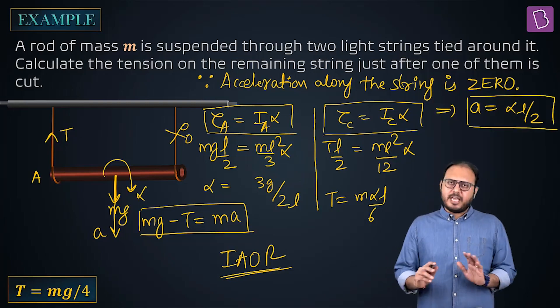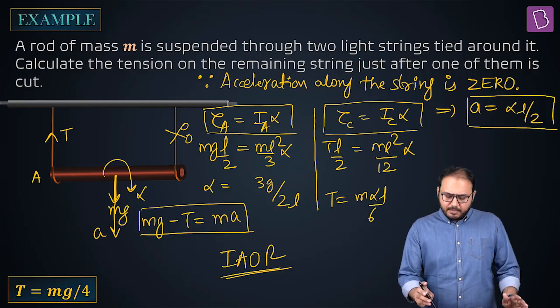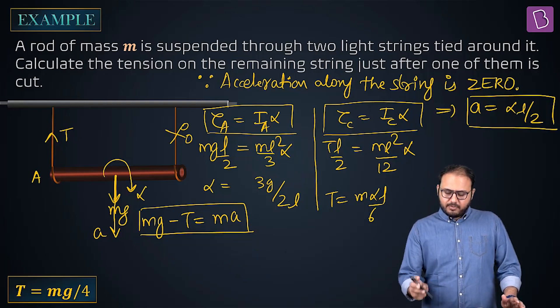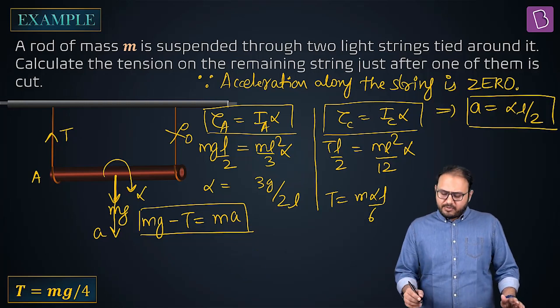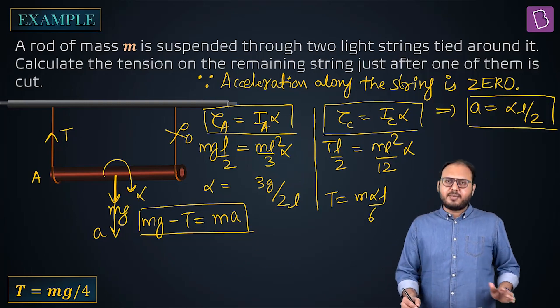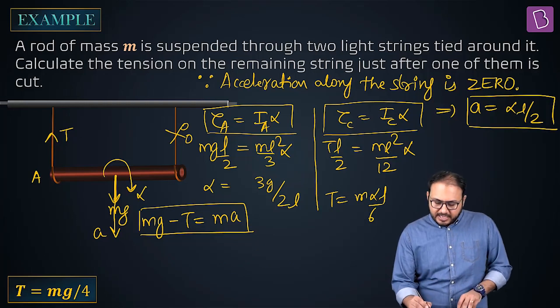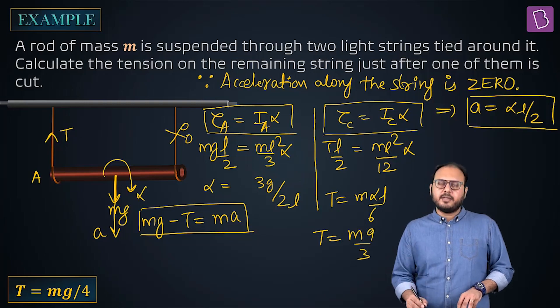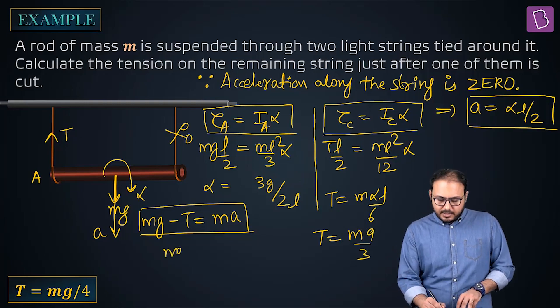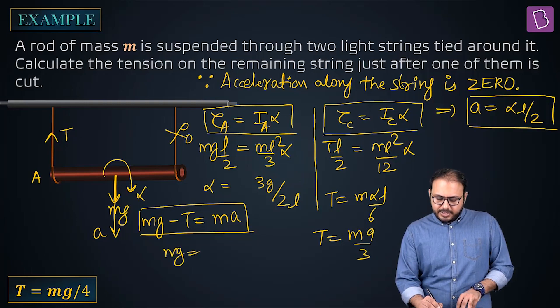A equal to alpha L by 2, same that doesn't change. Mg minus T equal to Ma. One gives you alpha equal to 3G by 2L, one gives you tension equal to M alpha L by 6. Okay I'll solve it for you. Tension equal to M alpha L by 6 means T equal to M alpha L is 2A, M A by 3. Add it. Mg minus T and that will become equal to 4MA by 3.